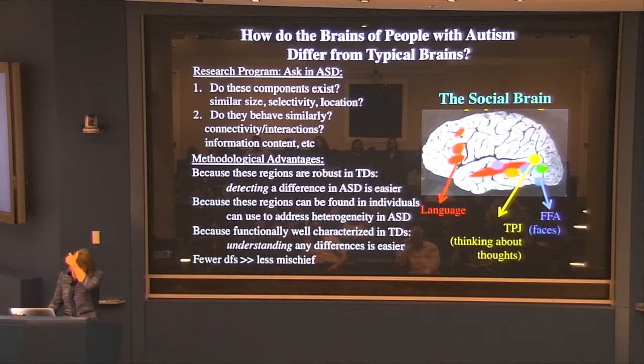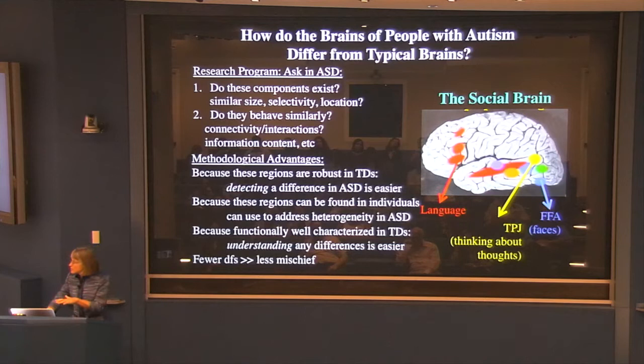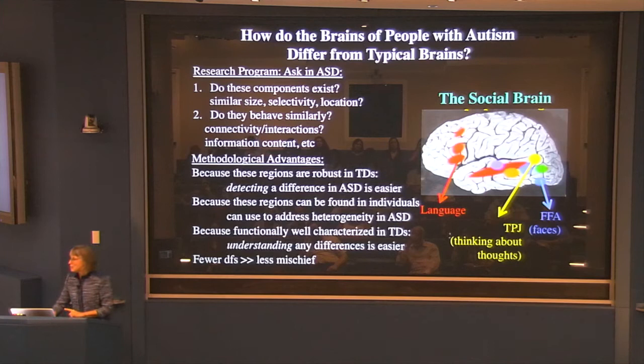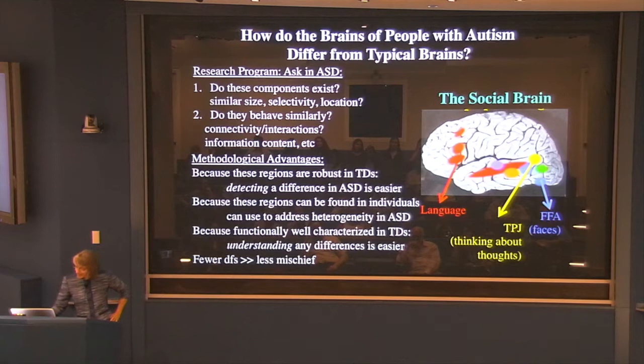The final reason this approach is good: by studying these well-defined regions, you're tying your hands in a good way. A lot of neuroimaging work suffers from excessive degrees of freedom — you have a huge dataset with enormous numbers of dimensions, and you can fish through it every which way. You will find something; you're guaranteed to find something. But a lot of what you find will be spurious. By restricting your hypothesis space, you're less likely to discover something spurious.